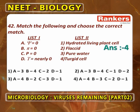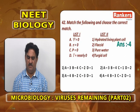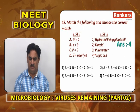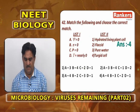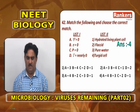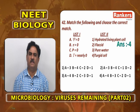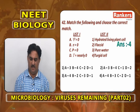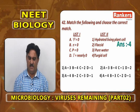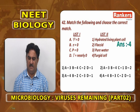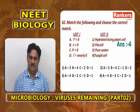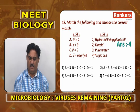Match the following and choose the correct sequence: psi (ψ) = 0, pi = 0, P = 0, and tau (metric potential) is nearly 0, matched with hydrated living plant cell, flaccid cell, pure water, and turgid cell.